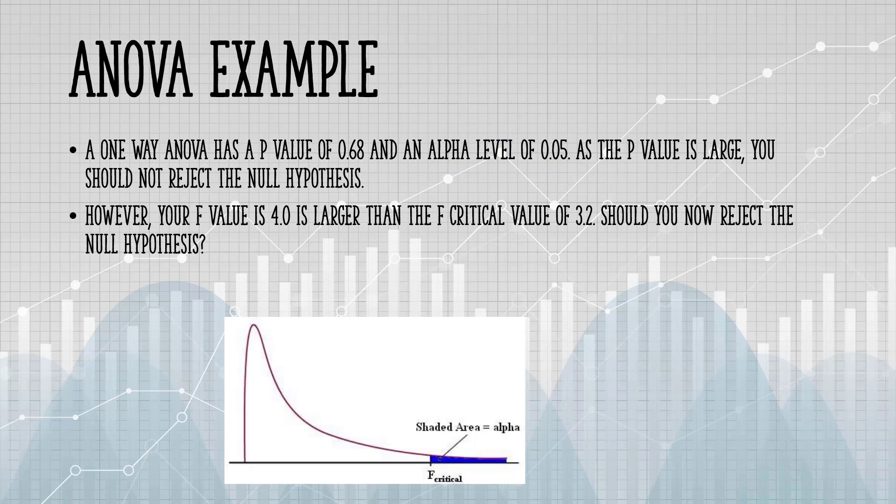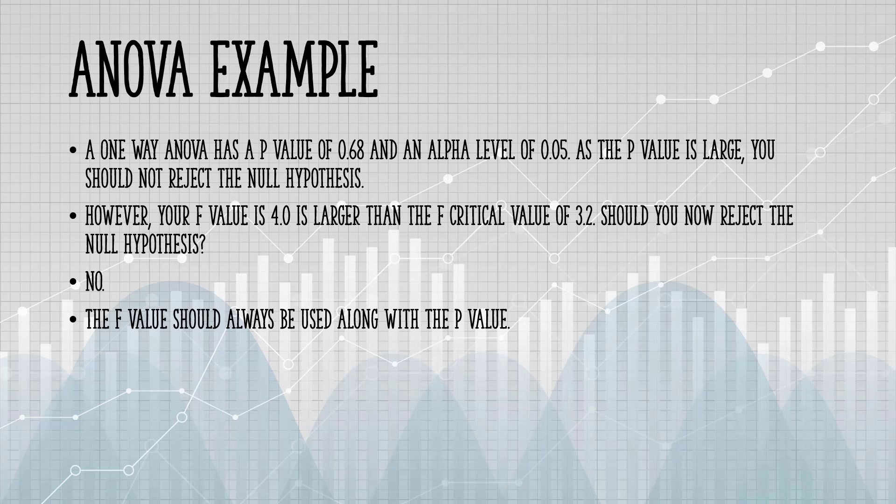However, your F-value of 4.0 is larger than the F-critical value of 3.2. This might make you question, should you now reject the null hypothesis even though you didn't get a small P-value? The answer is no, because the F-value always needs to be used with the P-value.